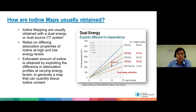How are iodine maps usually obtained? Iodine mapping is usually obtained from a dual energy or dual source CT system, because it relies on the differing absorption properties of iodine at both high and low energy levels. For example, we can use 100 kVp and 140 kVp — two different energy sources — and use the difference to quantify the amount of iodine within the lesion, generating a tissue iodine map.